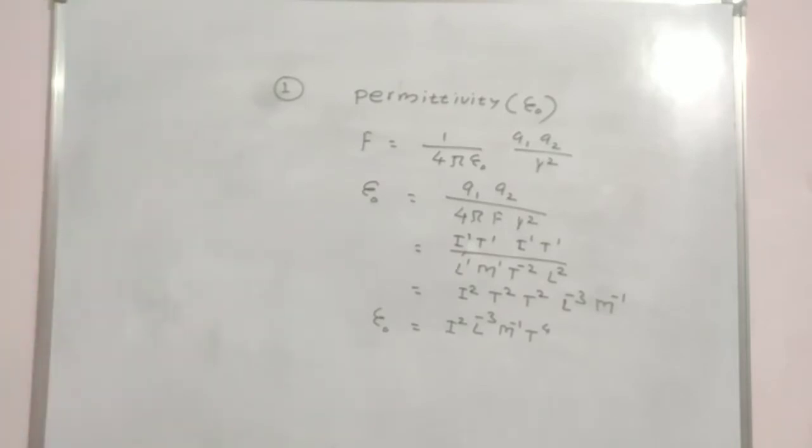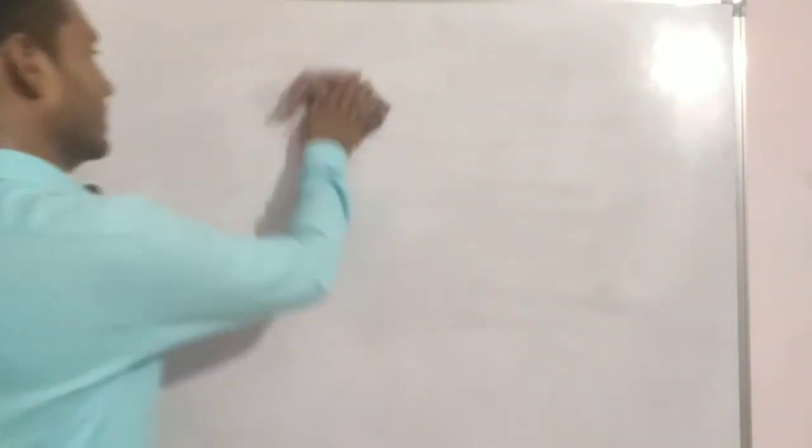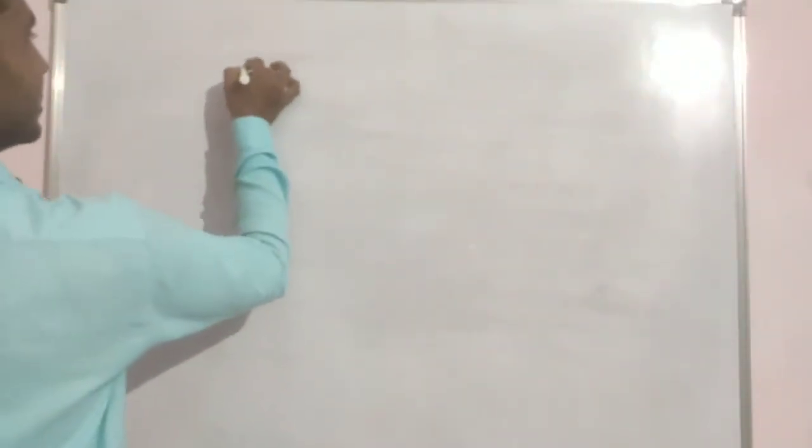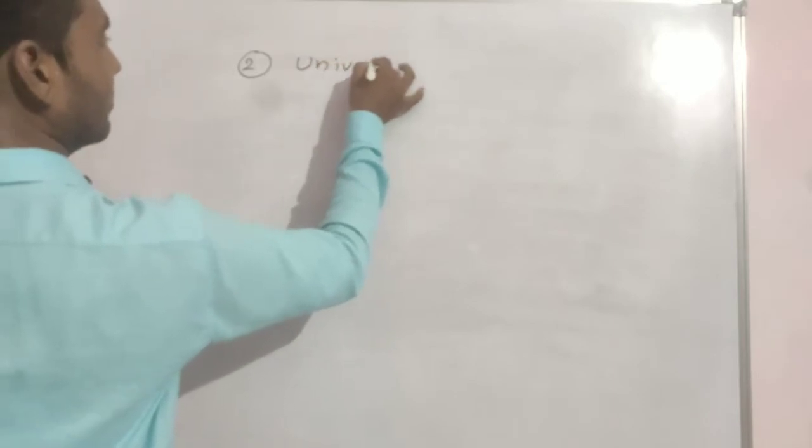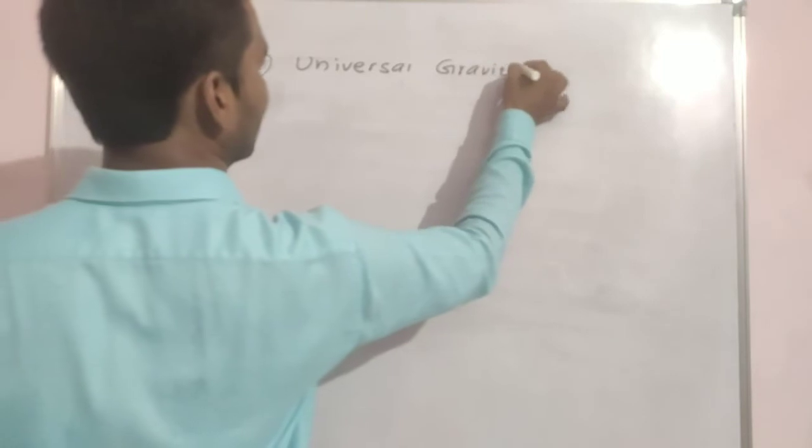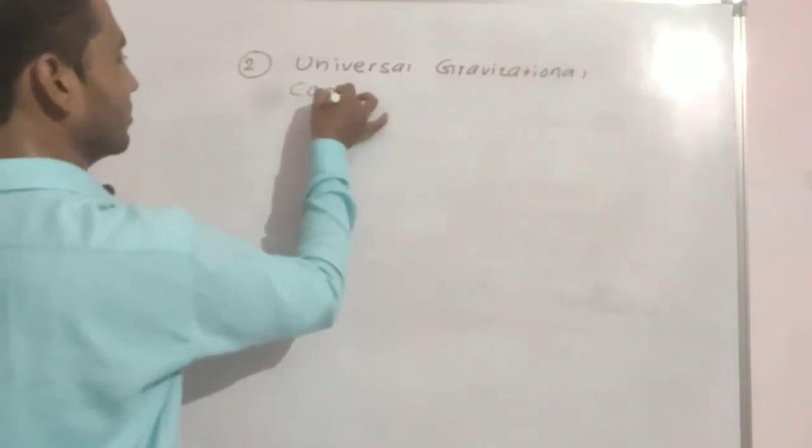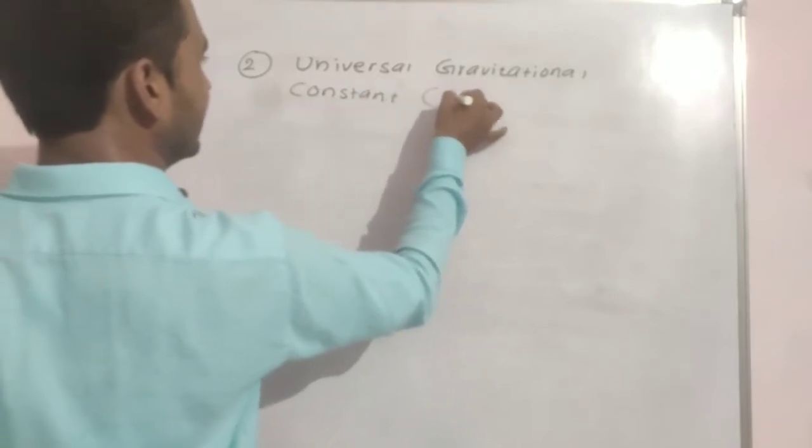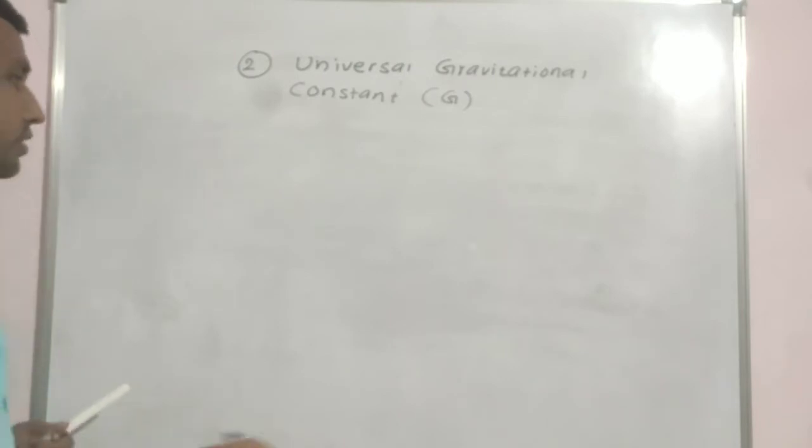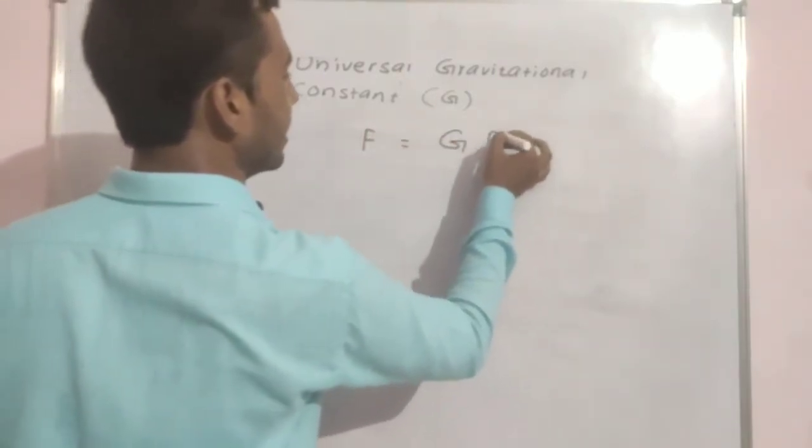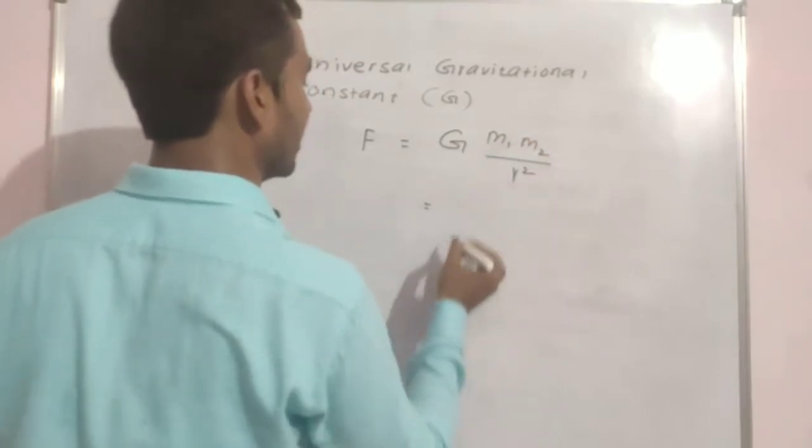So next dimension, the universal gravitational constant that is denoted by capital G. We found permittivity dimension from Coulomb's law. Now capital G comes in Newton's law of gravitation, the universal gravitational constant.